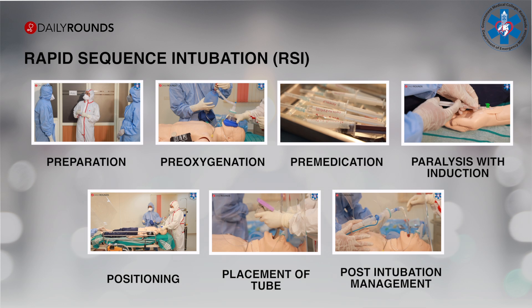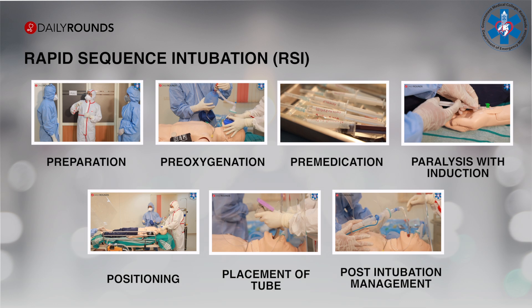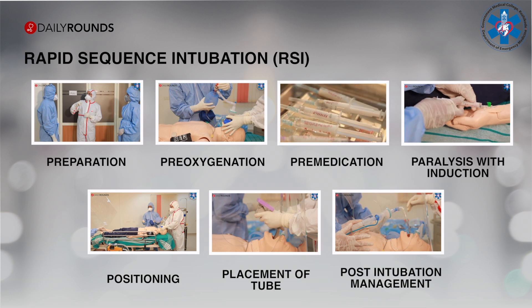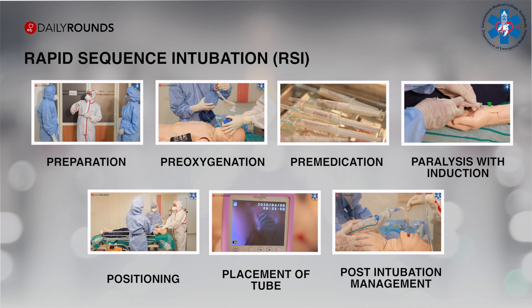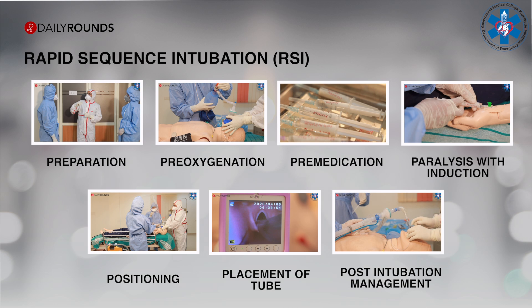Rapid sequence intubation can be divided into seven P's of RSI. It includes preparation, pre-oxygenation, pre-medication, paralysis with induction, positioning, placement of tube, and post-intubation management. Let's go through each of these steps in detail.